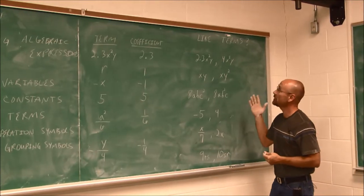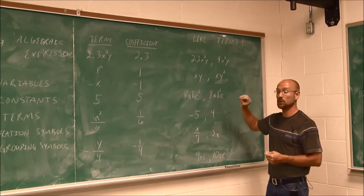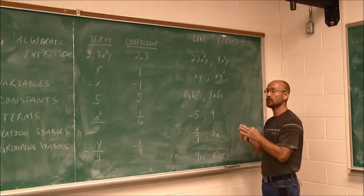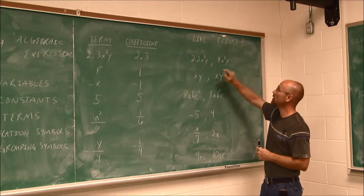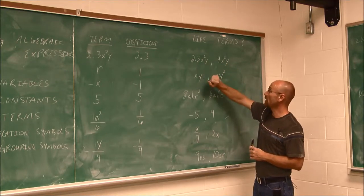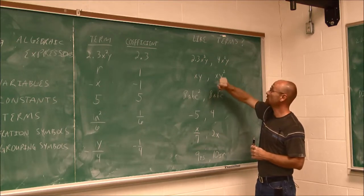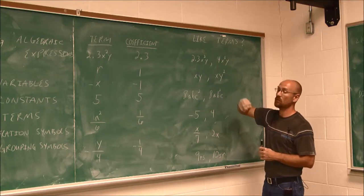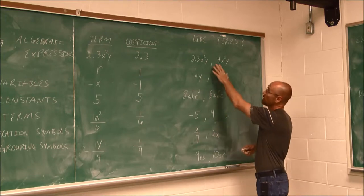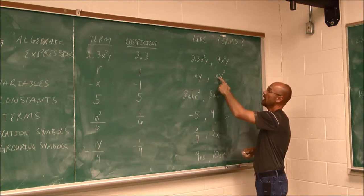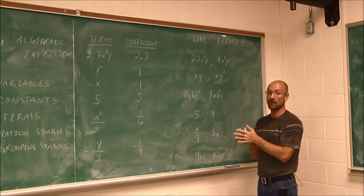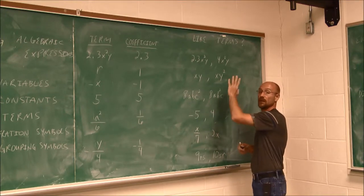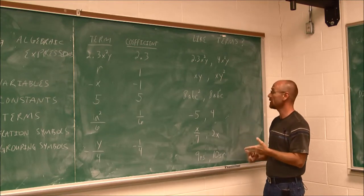The other thing we have to determine is like terms. In order for a term to be like, it has to have the same variables, and each respective variable has to be raised to the same power. So let's look at the first example — they both have an x and a y. The x is squared, and this x is squared. The y is to the first power, and this y is to the first power. So these would be like terms. Looking at the next one — we have xy and xy squared. They both have the same variables, but one y is squared and this one isn't, so they are not like terms.